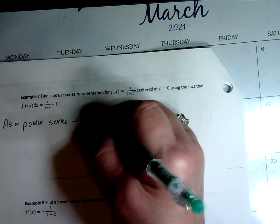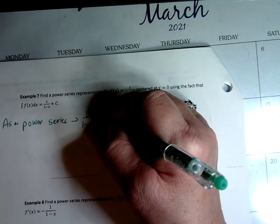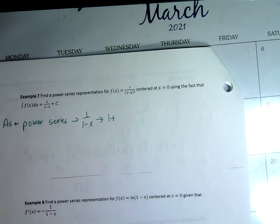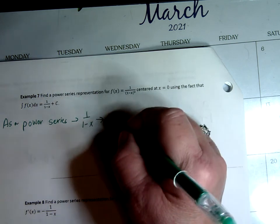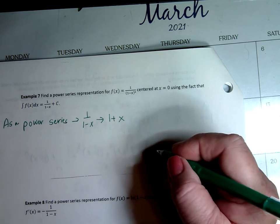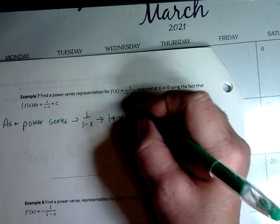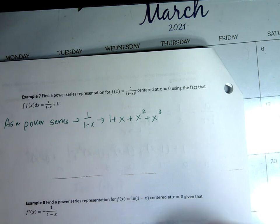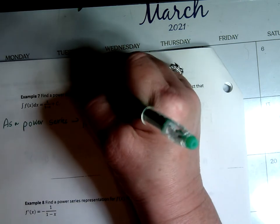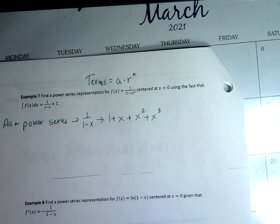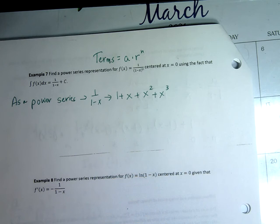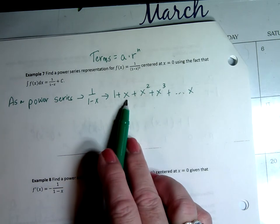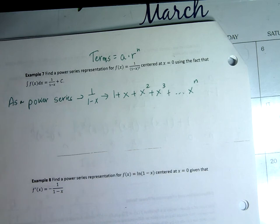For 1 over (1 minus x), a equals 1 and r equals x. The first four terms are: n=0 gives 1, n=1 gives x, n=2 gives x squared, n=3 gives x cubed. The terms are generated by a times r to the nth power, and the general term is x to the n.